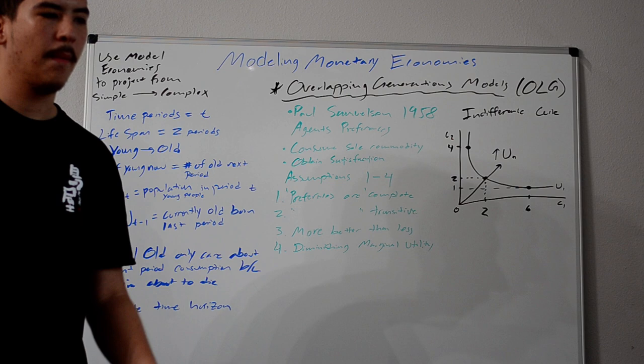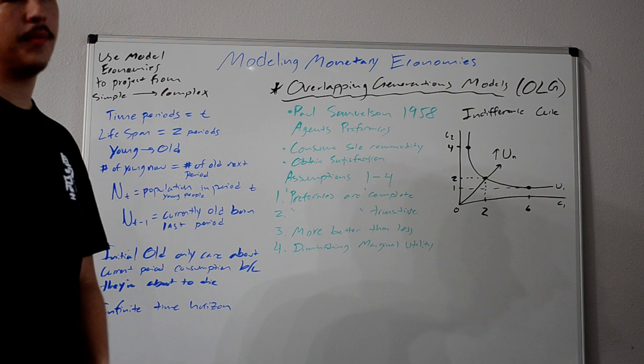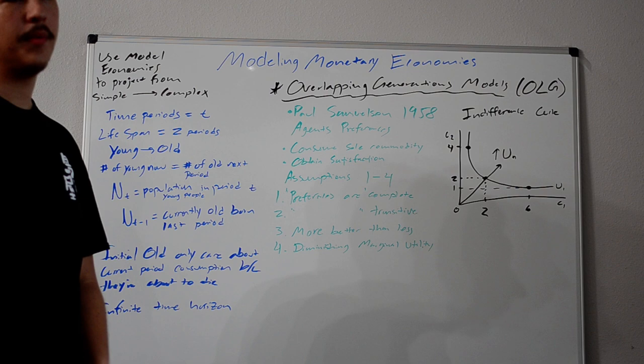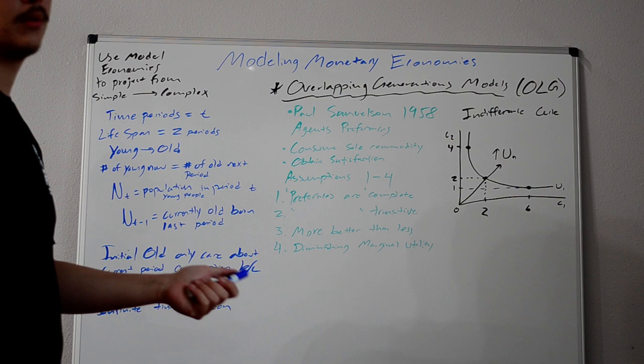The only other preference they have is to obtain satisfaction. In this model when you're young, you have a bunch of food. But you can't save it for when you get old. The food expires, it goes bad. So, to obtain satisfaction in both periods, you have to find some way to consume food when you're old in the next period. That is what we're essentially trying to accomplish using money in this example.